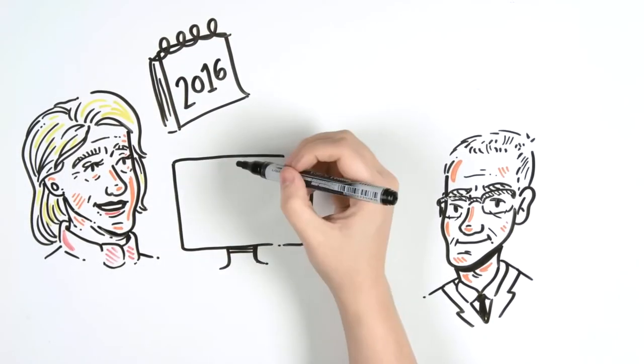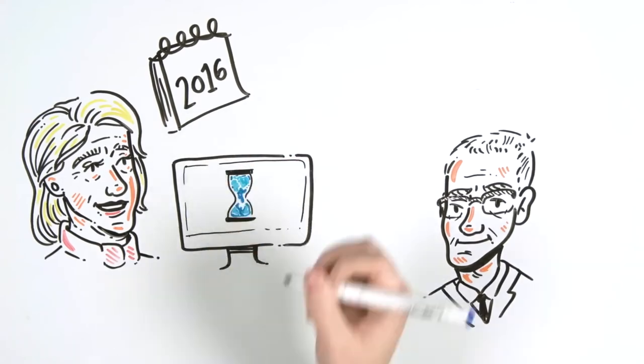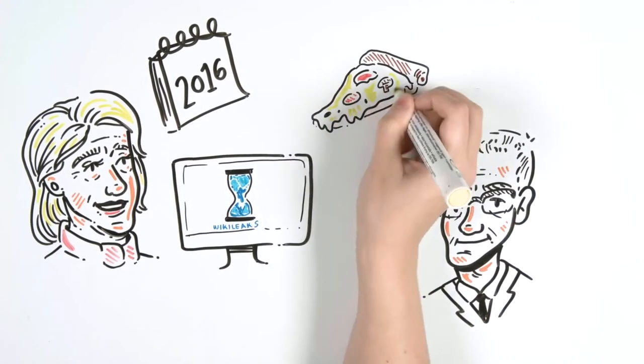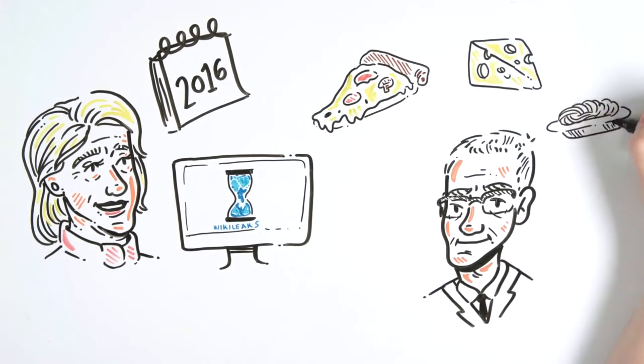During the election process, emails from him were leaked through WikiLeaks. The strange thing about these emails was that they were in a code with words like pizza, pasta, and cheese.